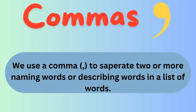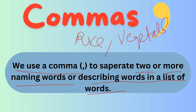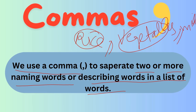Now, where we put commas? How do we put commas? We use a comma to separate two or more naming words or describing words in the list of words. So we put the commas in between the naming words, describing words, or other words, right? When we write more words — for example, we have written rice, vegetables, milk — so these are the naming words. We put commas in them because these are different naming words. So we put commas in between them.